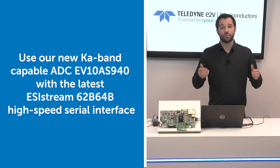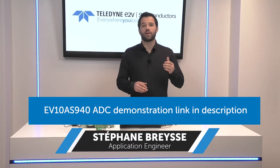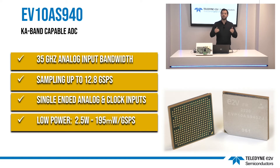We have demonstrated in a previous video our new microwave ADC, the EV10AS940, capable to directly digitize signals in multiple bands from low frequency to Ka-band. With its ultra-wide analog input bandwidth of 35 GHz, its sampling rate up to 12.8 gigasamples per second, its single-ended analog and clock inputs, and its low power consumption of 2.5 Watt, it makes this ADC a powerful enabler to migrate more RF hardware to digital and to build on-the-fly reconfigurable RF systems.